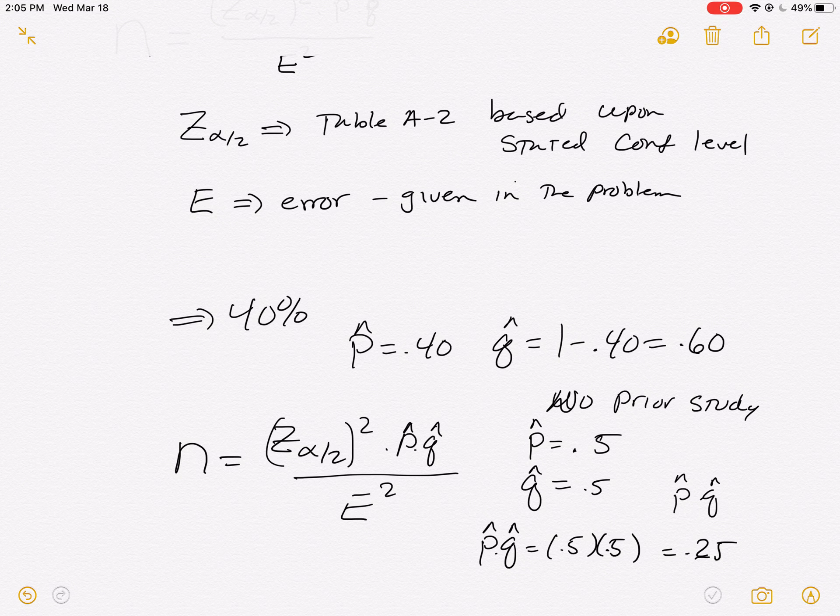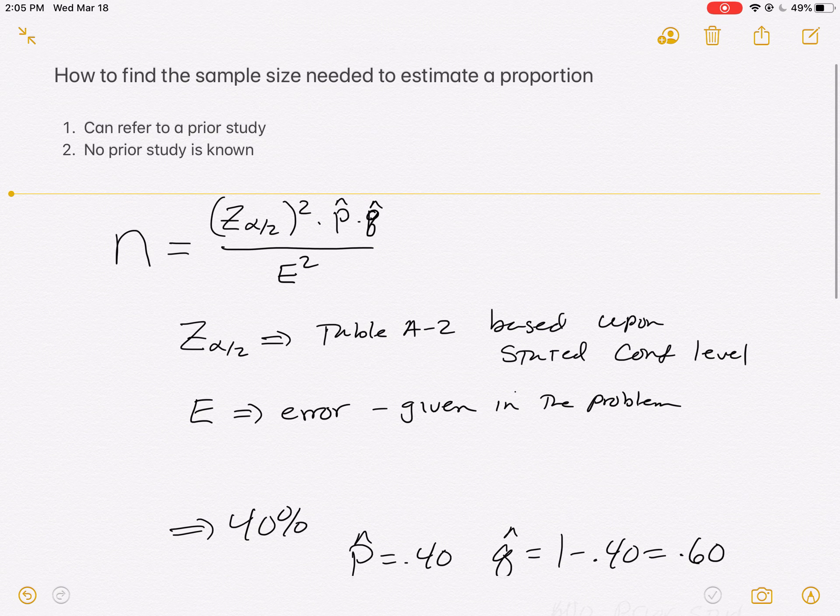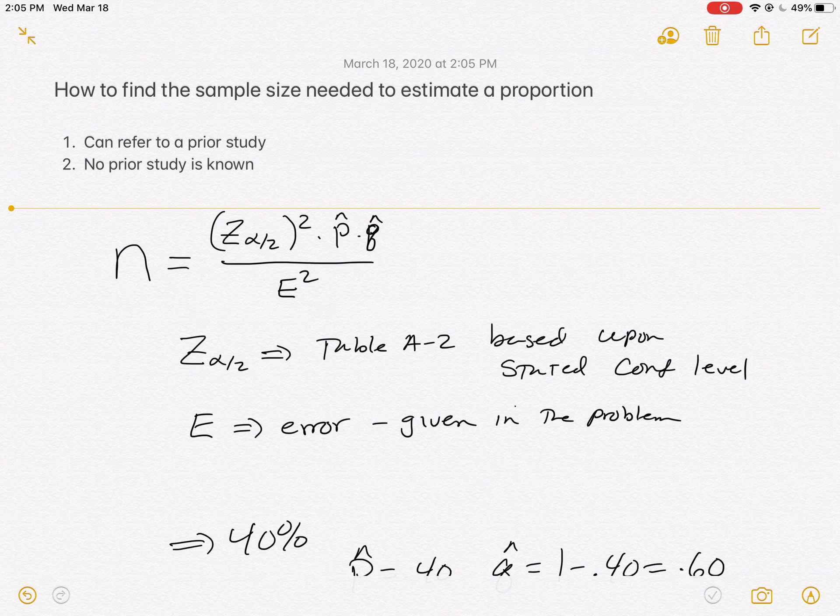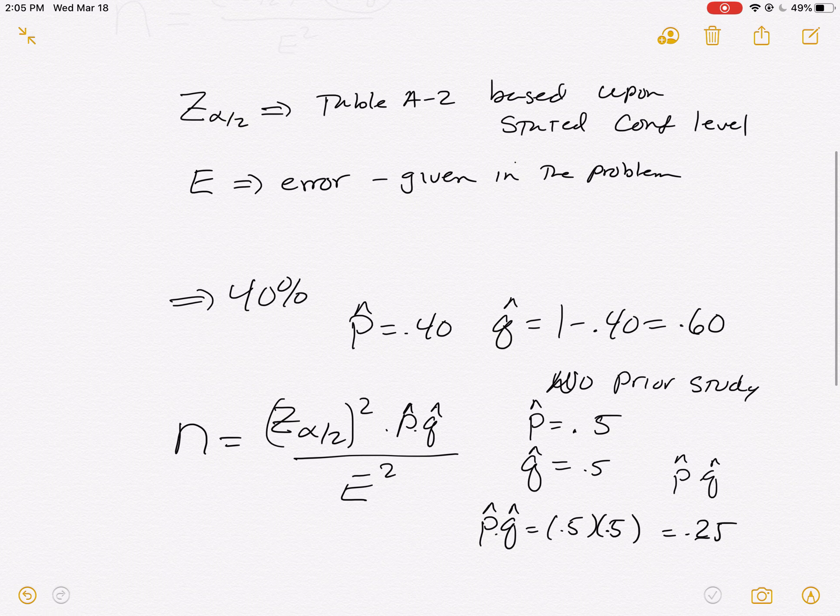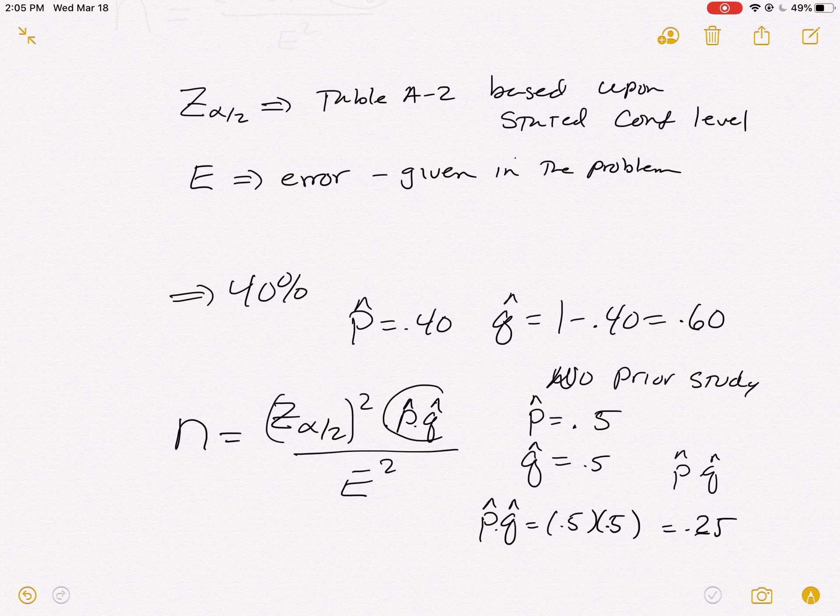That's the basics of what we're going to be doing. As we go to these problems, we're going to be asked to find a sample size. And we're either going to have a prior study to refer to so that we know numbers to drop in here. Or we're not going to be given a prior study and we'll know exactly what to put in there. 0.5, 0.5, that won't even be in the problem. So you'll watch this happen as we do some other examples, but I just wanted to give you the basics of it first.